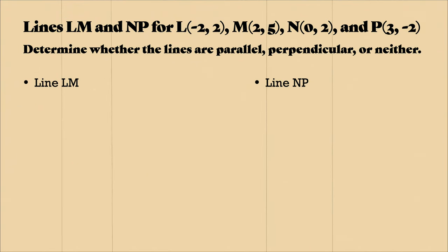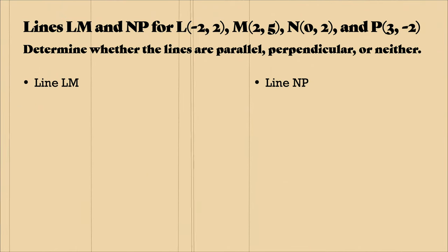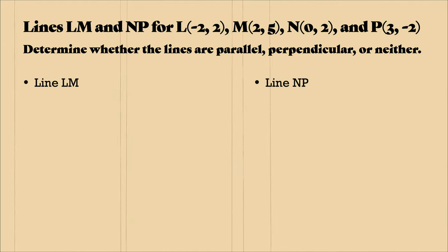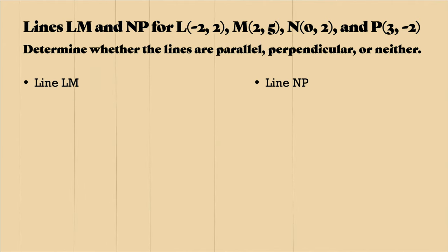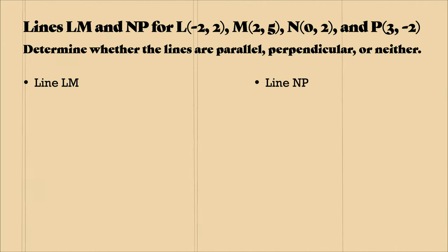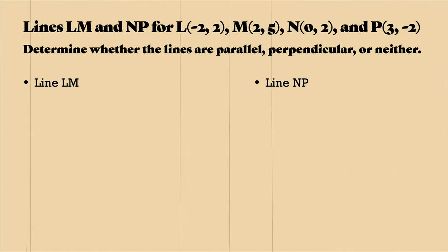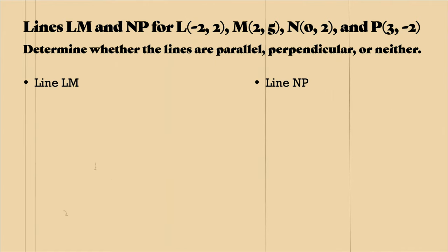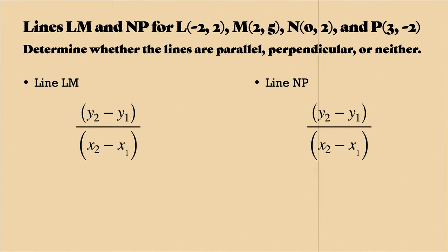Lines LM and NP for L, negative 2, 2. M, 2 to 5. N, 0, 2. And P, 3, negative 2. We are determining whether the lines are parallel, perpendicular, or neither. So in this case, LM and NP once again have the same formulas. So when I plug in my values here,